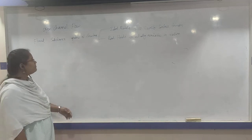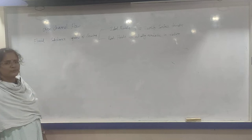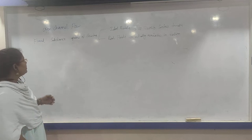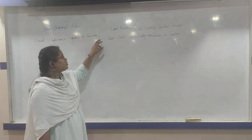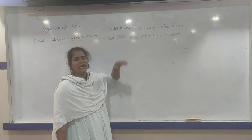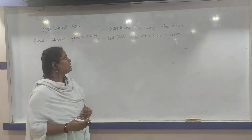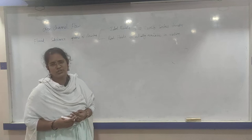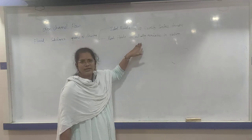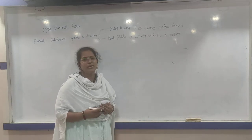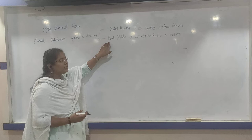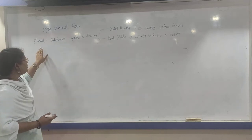Before going to open channel flow, we will see what is fluid. Fluid is a substance which is capable of flowing from one place to another place. Fluid is divided into two types: one is ideal fluid and the other one is real fluid. Ideal fluid is nothing but which consists no viscosity, no surface tension. Real fluid is nothing but naturally available in nature. This is about fluid.